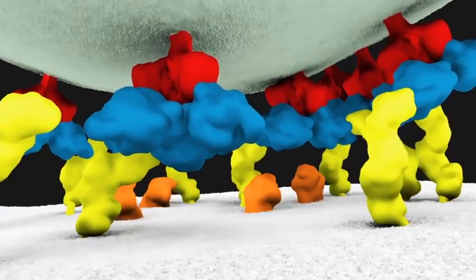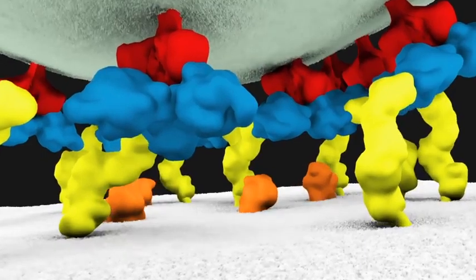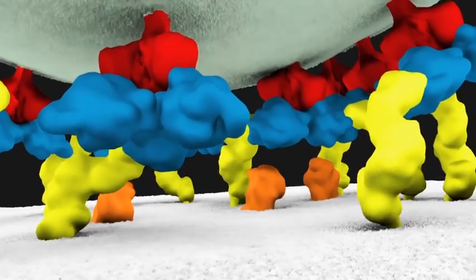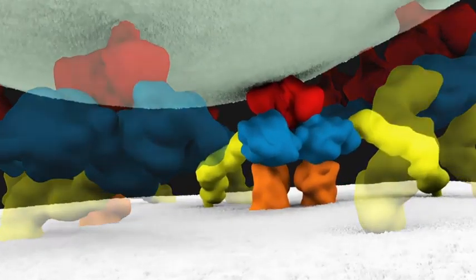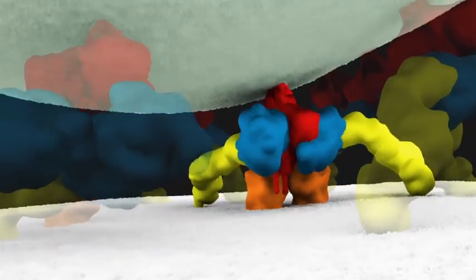Initial binding occurs through CD4 proteins, shown here in yellow. Binding of a second membrane protein, called a co-receptor, shown here in orange, triggers a dramatic change in shape of envelope protein.